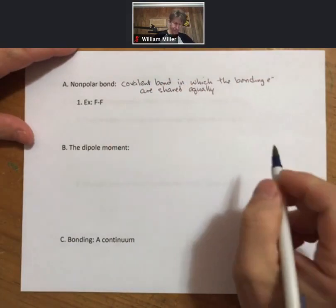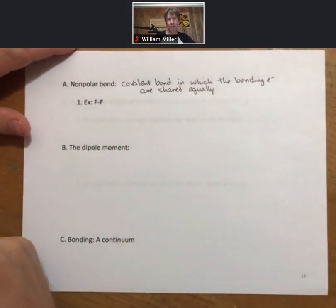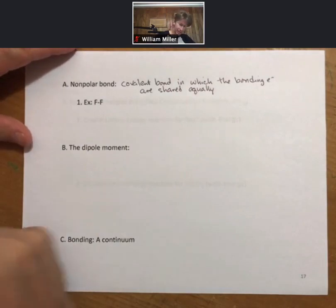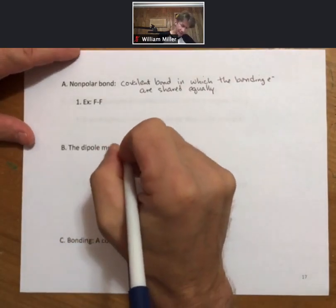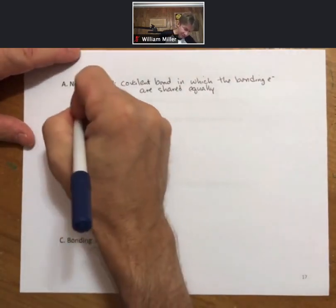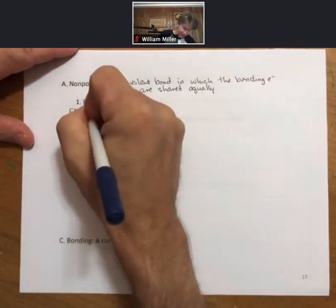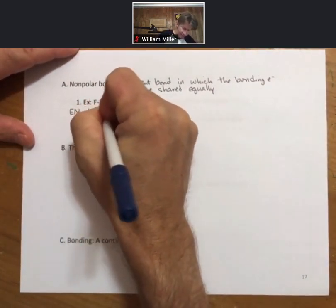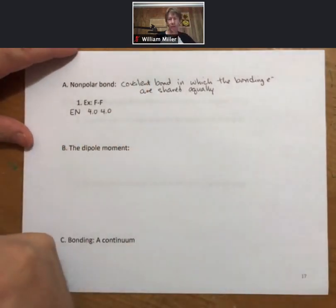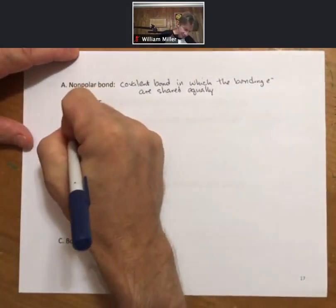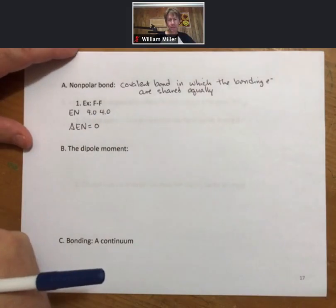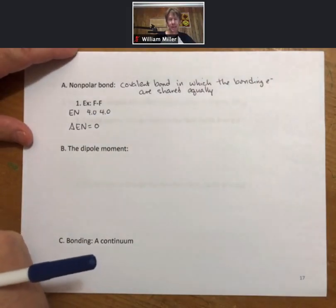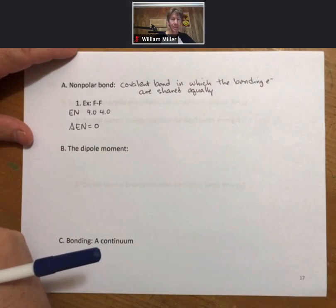The classic example is a bond in which both atoms are the same. There is no difference in electronegativity. Each fluorine atom has a 4.0 electronegativity score, so delta EN is zero. That is the definition of a nonpolar bond.